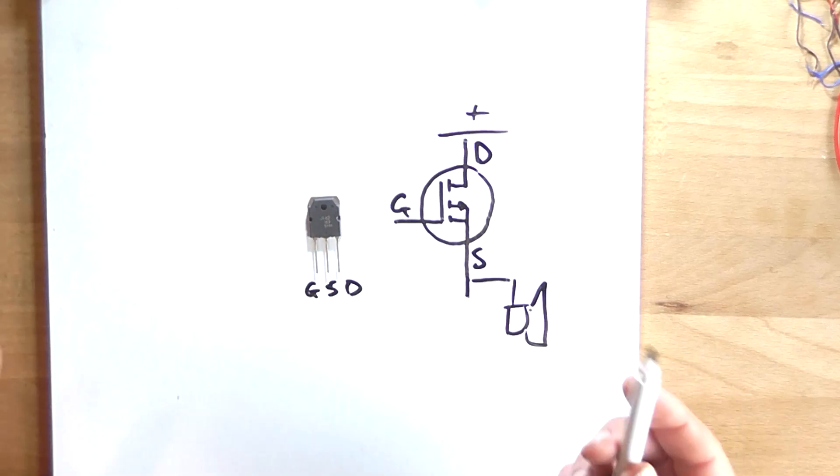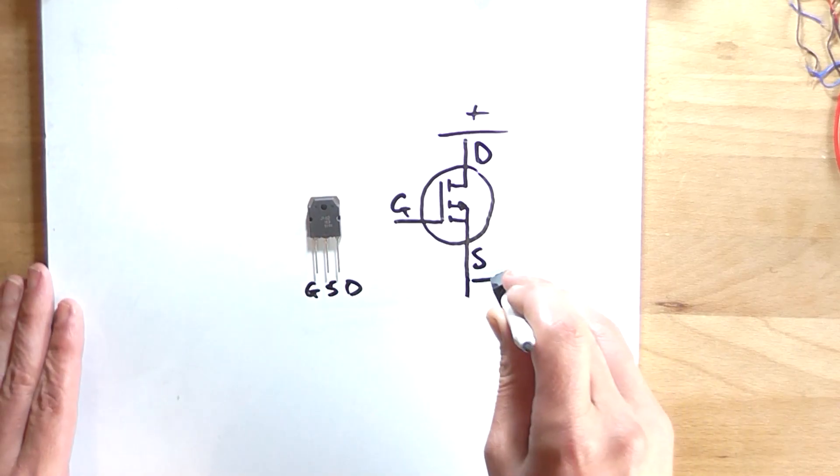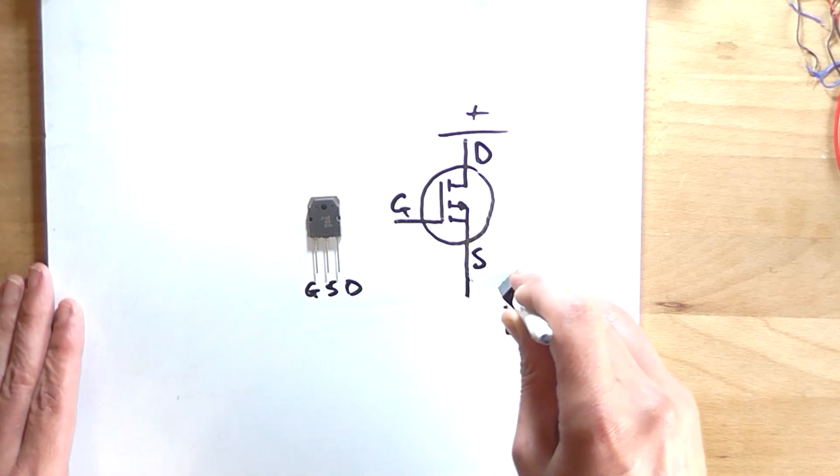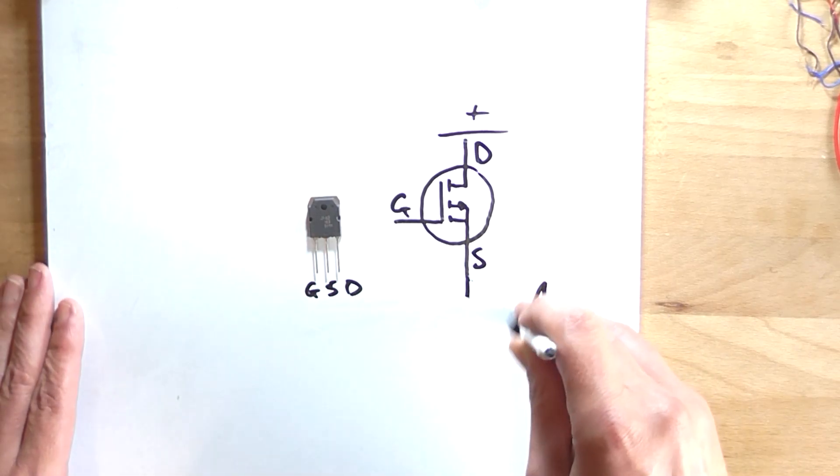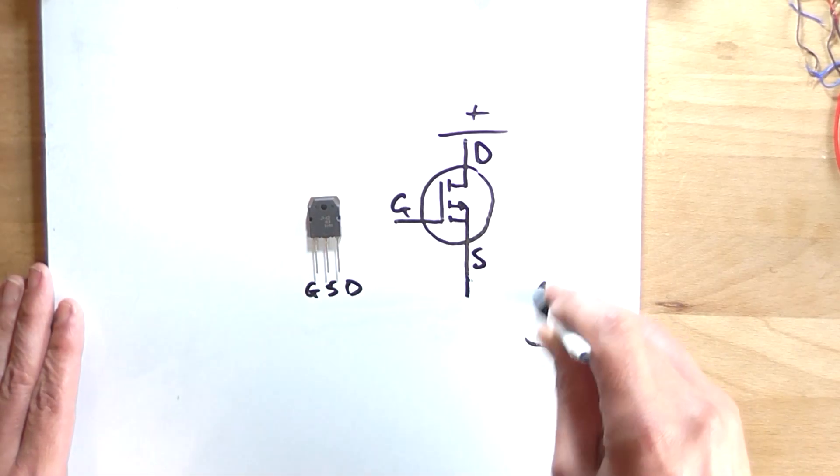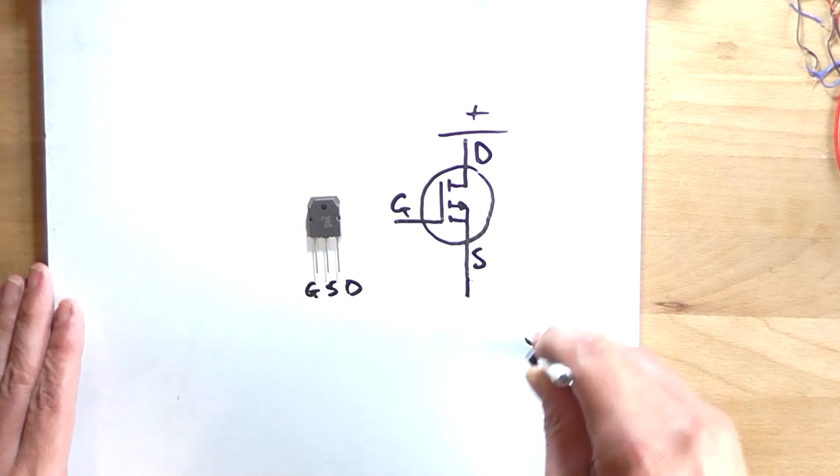And that's pretty much it — that's how we identify where the source and drain pins are on the schematic.